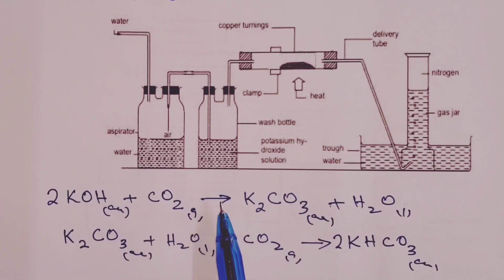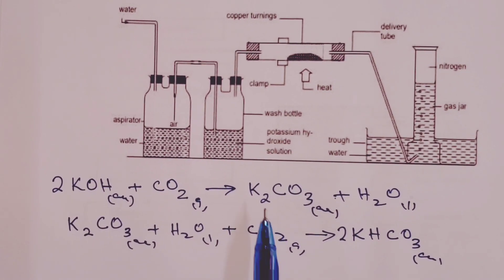So, these two are the equations for the reactions that take place in our wash bottle, which contains our alkali. Why we are doing this is to remove carbon (IV) oxide from air.